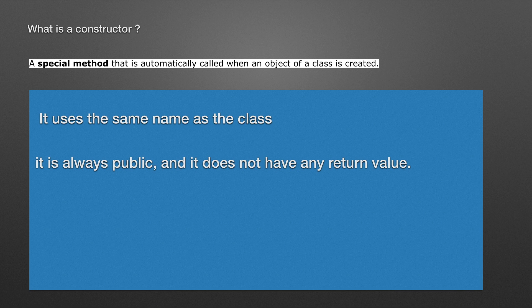That is why we are creating a class — we are creating a Student class. In that class, I will create an object. This is a special method because it uses the same name as the class. The class name is used as the name of the constructor — that is called a Constructor.